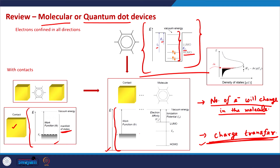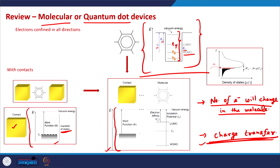In equilibrium, if just one electron comes in, by this change in number the Fermi level will go to the LUMO orbital. So the Fermi level depends on two phenomena: one is the change in the number of electrons in the molecule, and second is the change in the charge on the molecule.